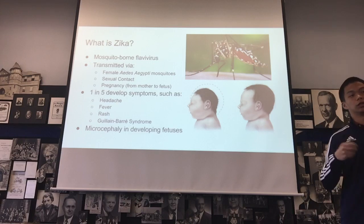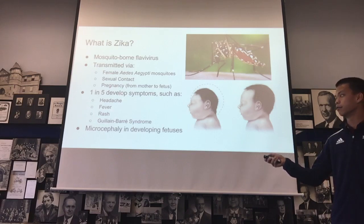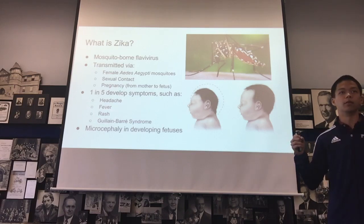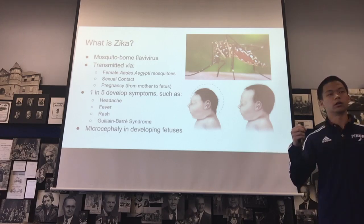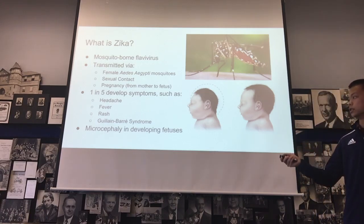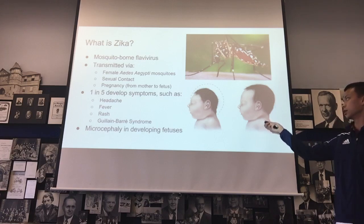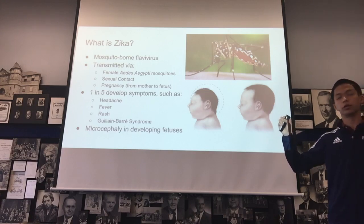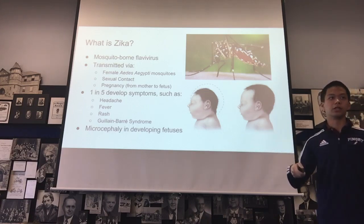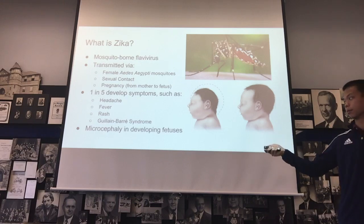However, it's not a really big deal for adults. Only one in five develop symptoms, and the symptoms are usually non-fatal — headache, fever, rash, and in the most extreme cases, Guillain-Barré syndrome, which is basically when your nervous system is attacked by your own immune system. But the big question with Zika is this microcephaly link. There was a higher rate of microcephaly — basically a smaller brain size in fetuses — correlated with the number of Zika cases. Researchers are now looking for a link to see if Zika is causing the microcephaly.